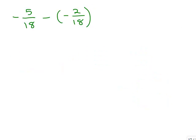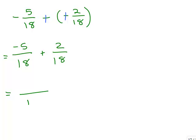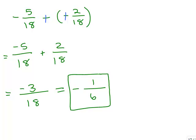Here's another one for you to try on your own: negative 5 eighteenths minus negative 2 eighteenths. The first thing to notice is that minus a negative means adding the opposite, so you get negative 5 eighteenths plus positive 2 eighteenths. We have a common denominator, so we add the numerators: negative 5 plus 2. There are more negatives than positives, so you take their difference, which is 3, and the answer is negative 3 eighteenths. Since it's a negative divided by a positive, the final answer is negative. Reducing 3 eighteenths by dividing by 3 gives negative 1 sixth.